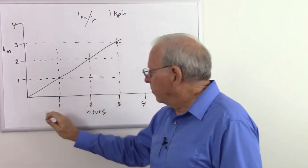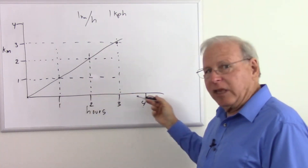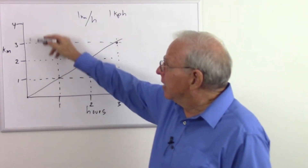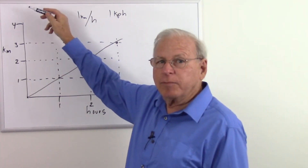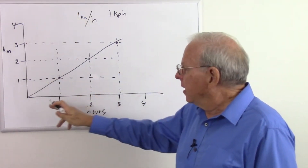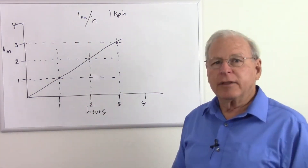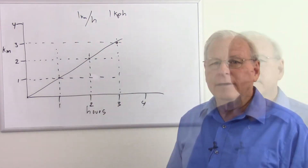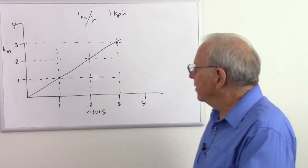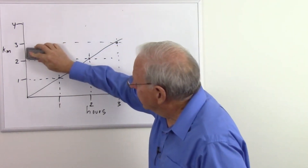When we measure with one of our axes as time — usually the horizontal axis — we are measuring in the time domain. Now let's modify our graph to measure something different as time goes by.